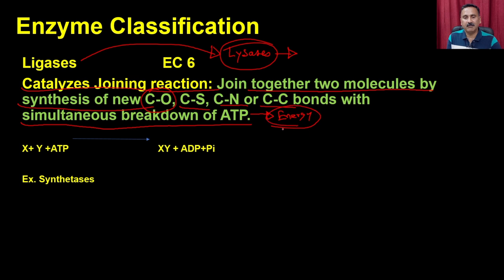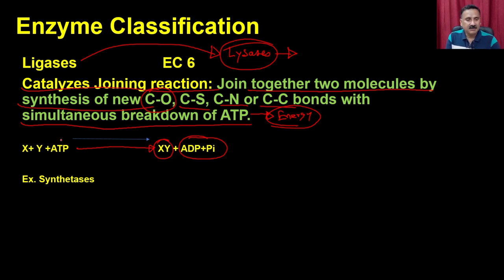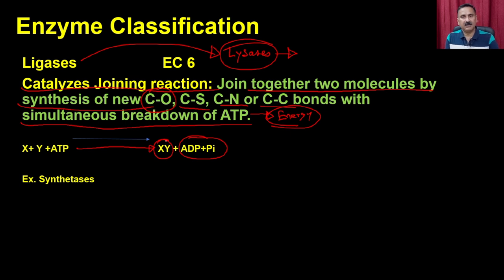When ligases synthesize new molecules, they often break down ATP, taking energy from ATP to form bonds. The general reaction: X + Y + ATP → XY + ADP + Pi. The energy released from ATP breakdown is used to activate bonds on X and Y, joining them. Examples are synthetases.